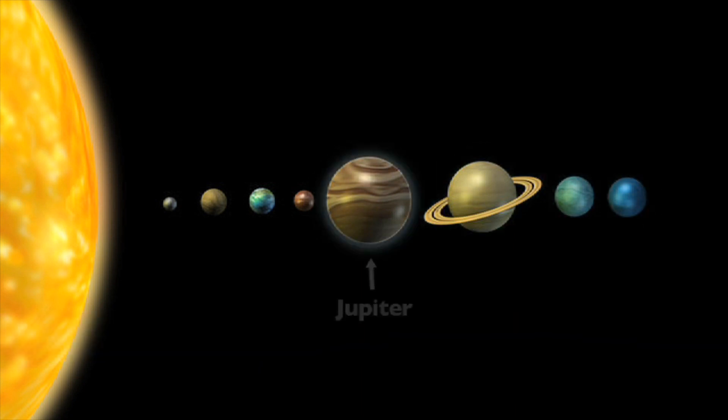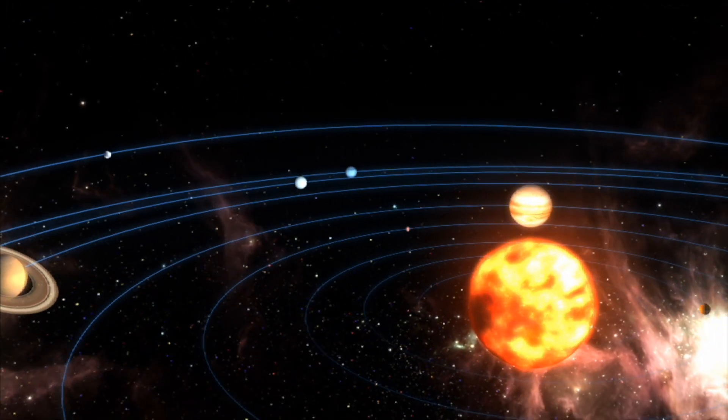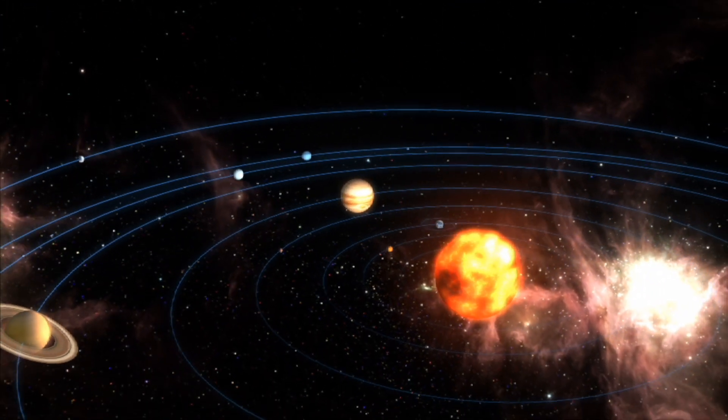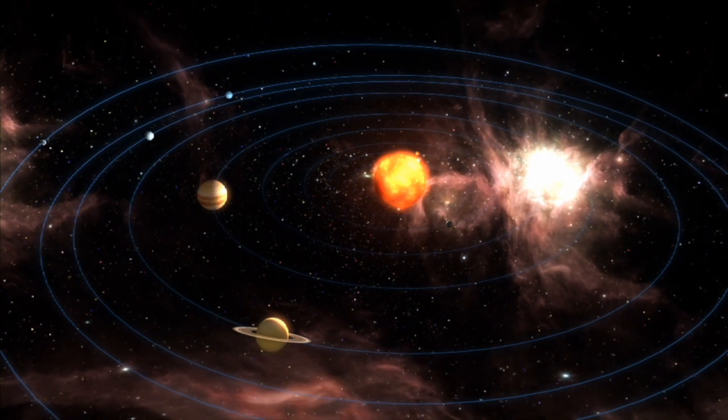Jupiter is the fifth planet from the sun. It is the largest planet in our solar system. It is so big that 1,300 Earths could fit inside it.